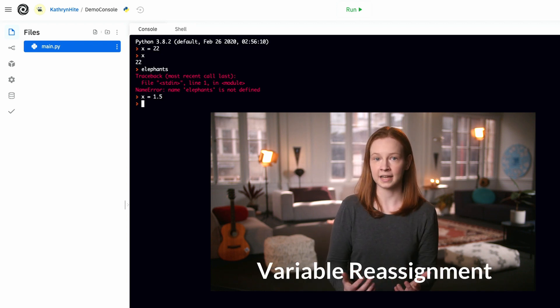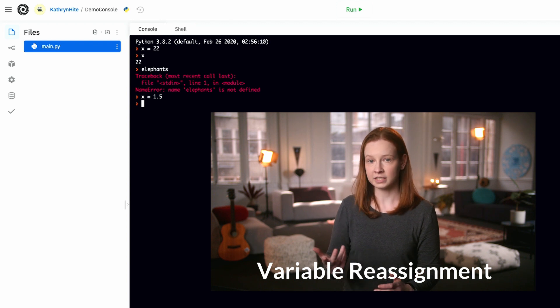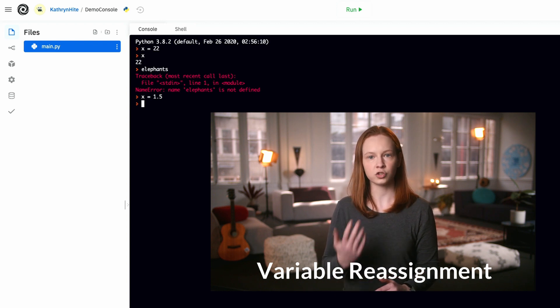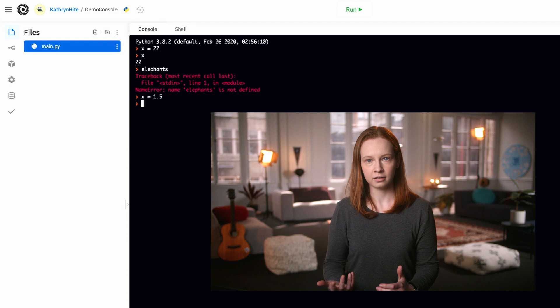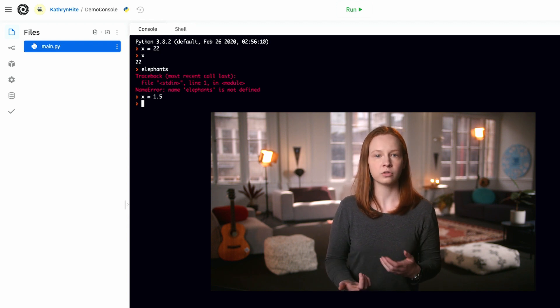This is called variable reassignment, and in the Super Mario example, the program is changing the score when a player gets a coin by reassigning a new value to the score variable.